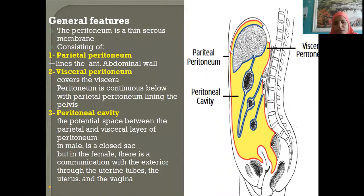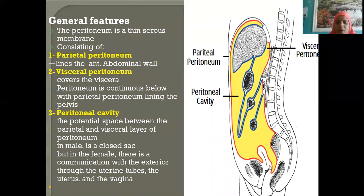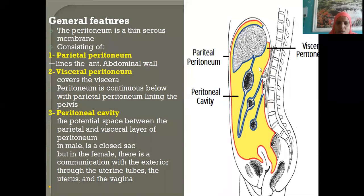The outermost covering is the parietal layer, and the one which is very close to the visceral organs we call the visceral layer. From this picture, the parietal layer is lining the abdominal wall — anterior abdominal wall and posterior abdominal wall in front of the vertebrae. The blue lining close to the visceral organ is visceral peritoneum.